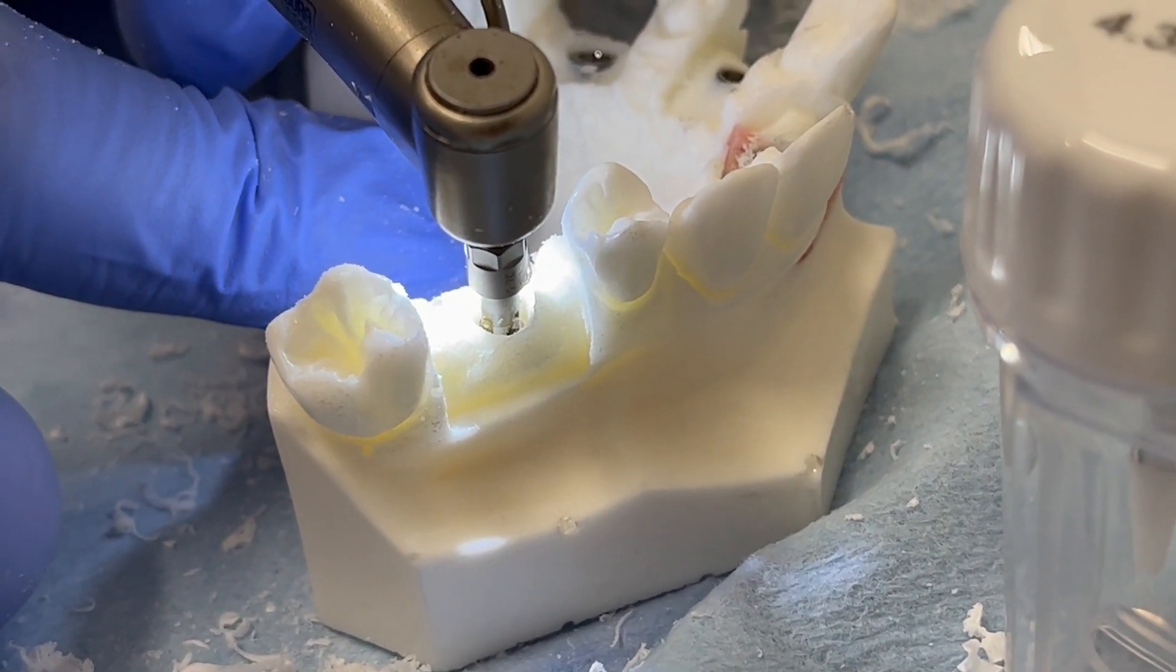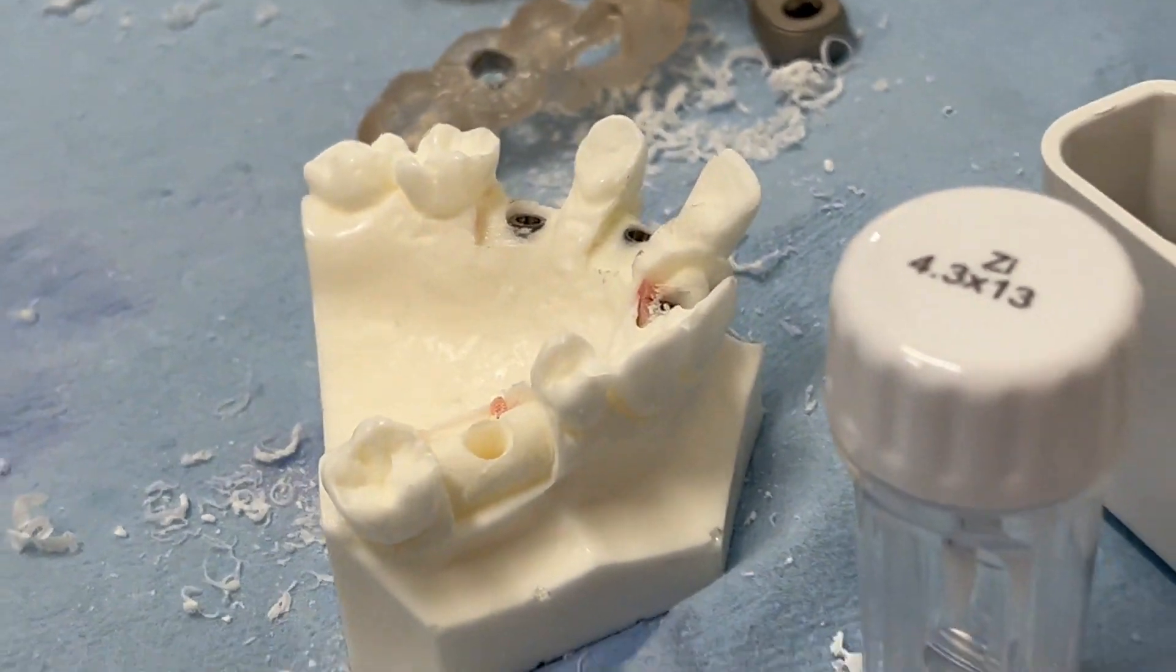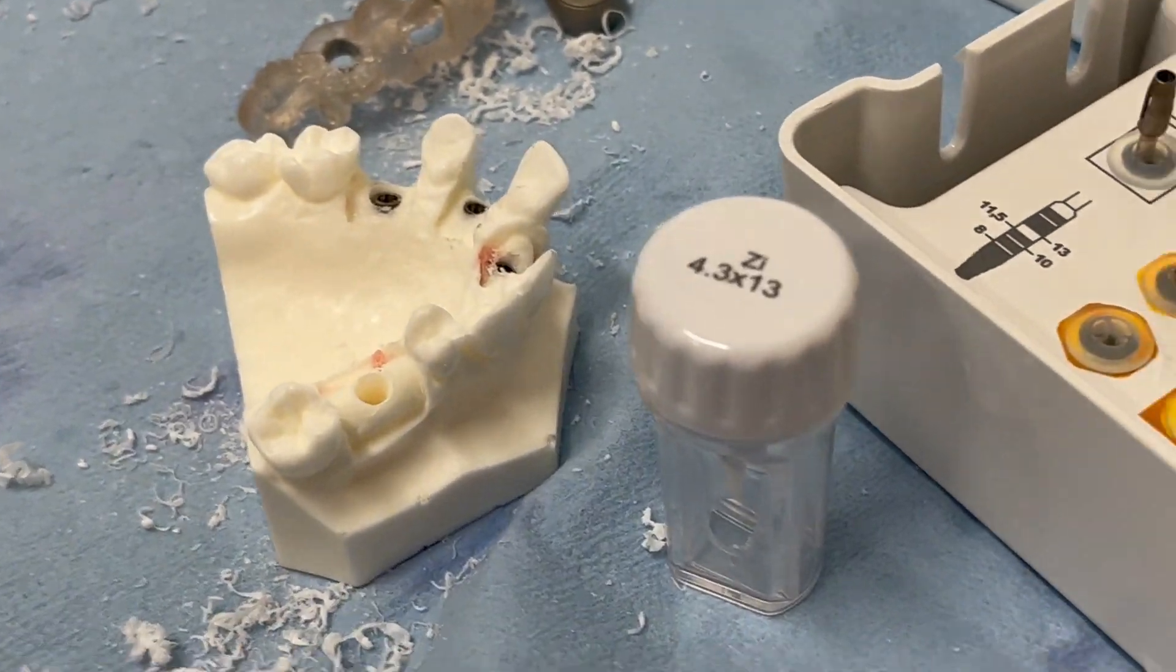And then we're going to just go backwards. We're going to turn this drill into reverse. And we're going to back this up, letting it do the work for you. So now we've threaded the inside of the osteotomy.